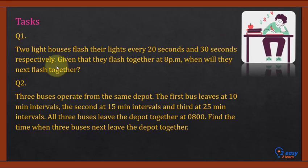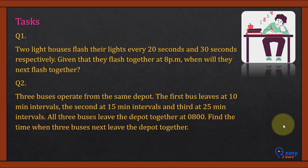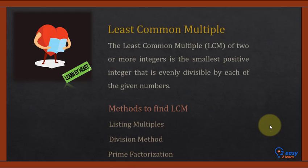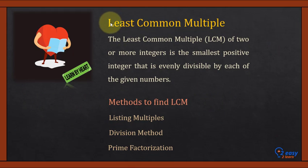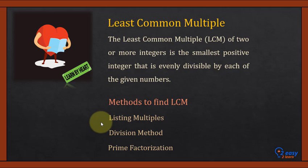Home task: two word problems are given — use the same method to solve both. You must memorize the definition of the least common multiple, know the three methods, and understand when to use each method.